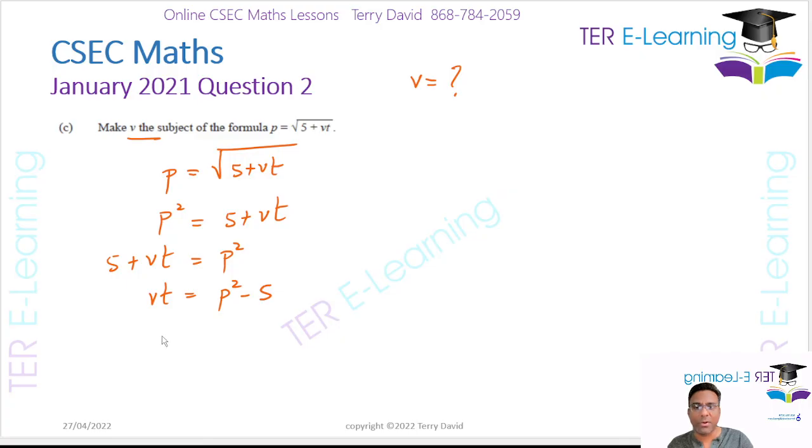And therefore, v is equal to p² minus 5 all over t. So I've made v the subject of the formula in this particular instance here.